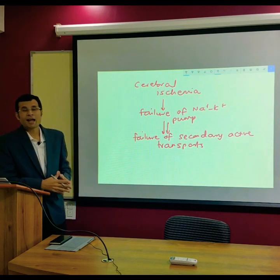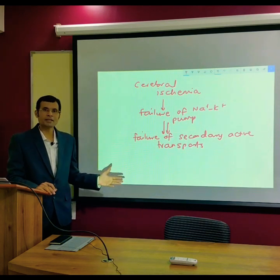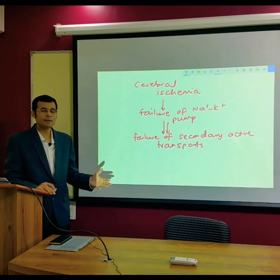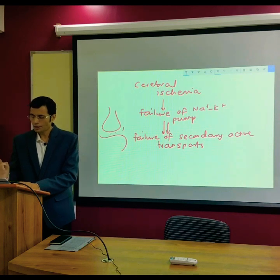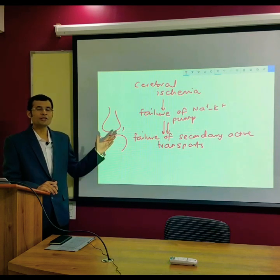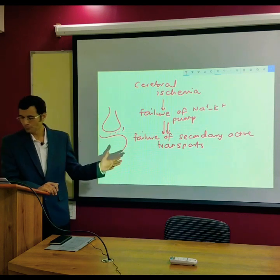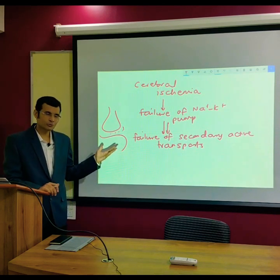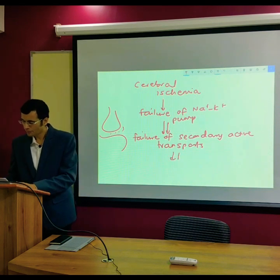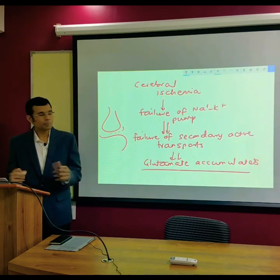It is important to understand that glutamate reuptake from the synapses — its clearance after release — is a sodium-dependent secondary active transport, a sodium-dependent symport. So if secondary active transports are failing, glutamate reuptake will also fail, and glutamate will accumulate and cannot be cleared from the synapses.